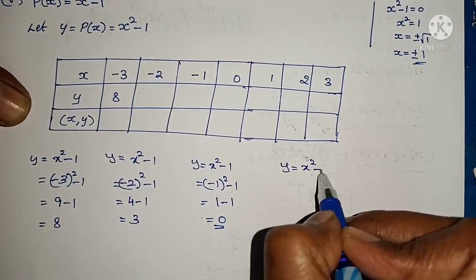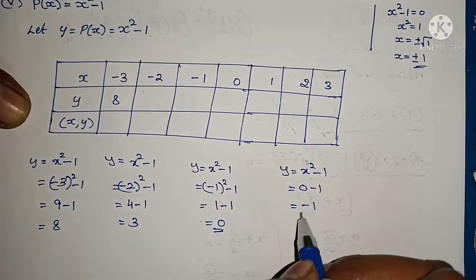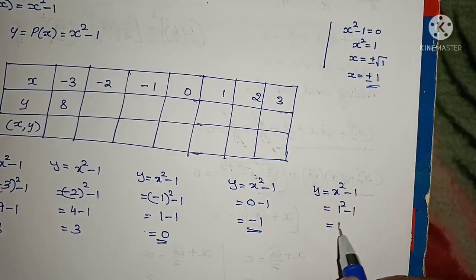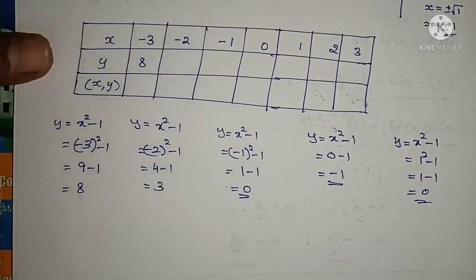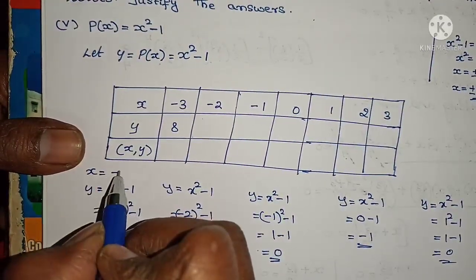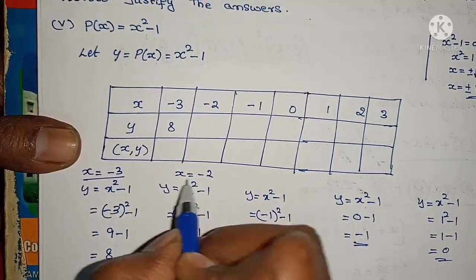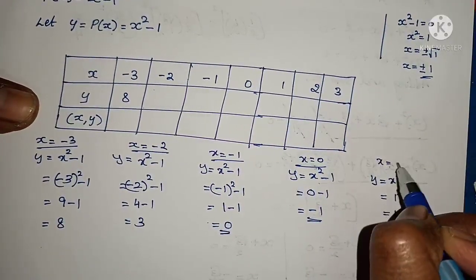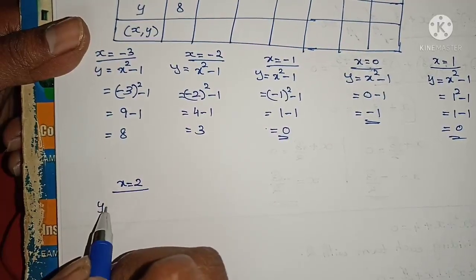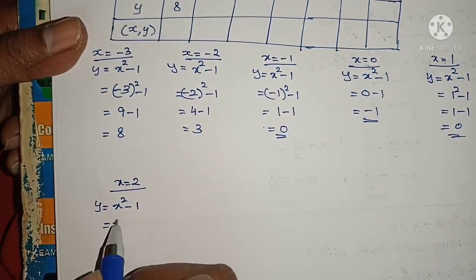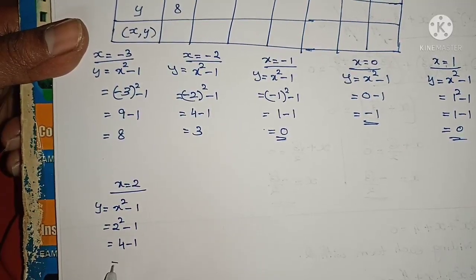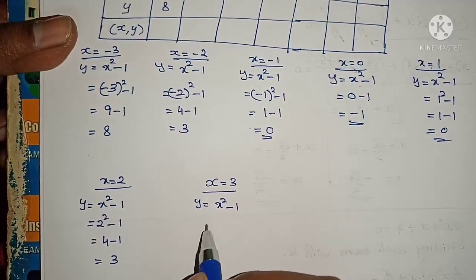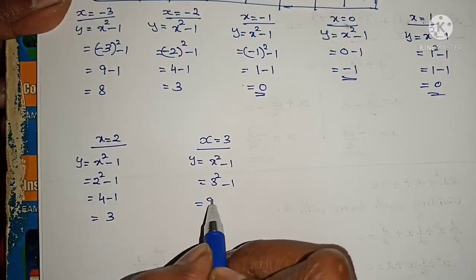For y = x² minus 1, substituting 0: y = 0 square minus 1 = minus 1. Substituting 1: 1 square minus 1 = 1 minus 1 = 0. Substituting 2: 2 square minus 1 = 4 minus 1 = 3. Substituting 3: y = x² minus 1 = 9 minus 1 = 8.